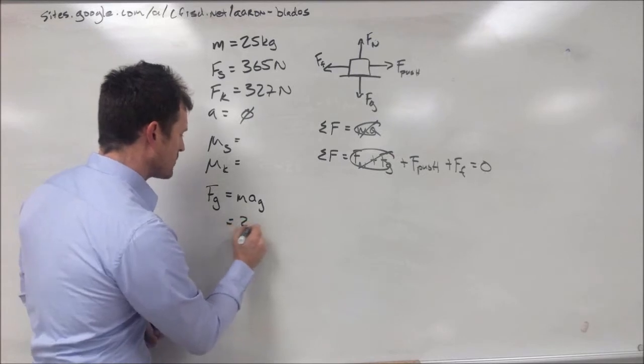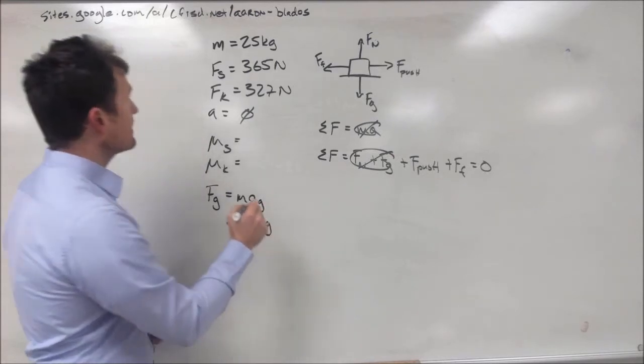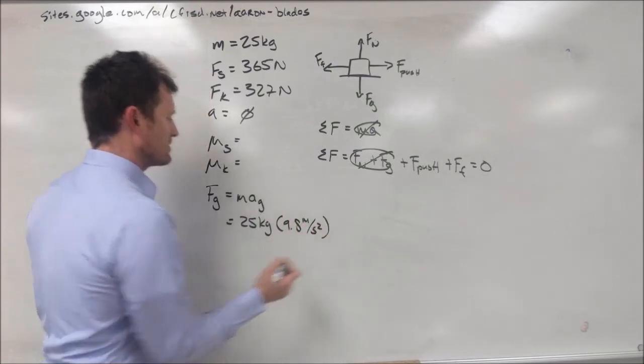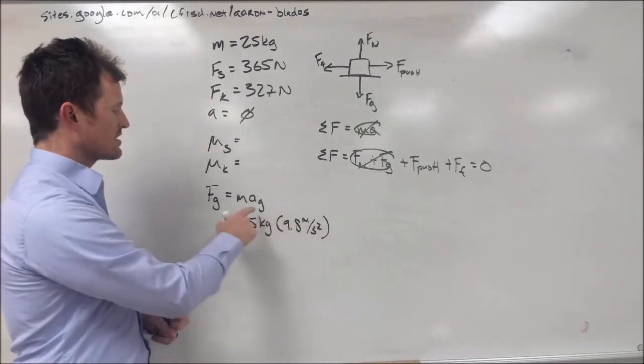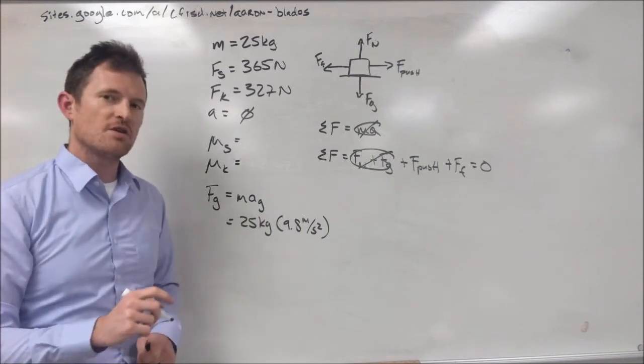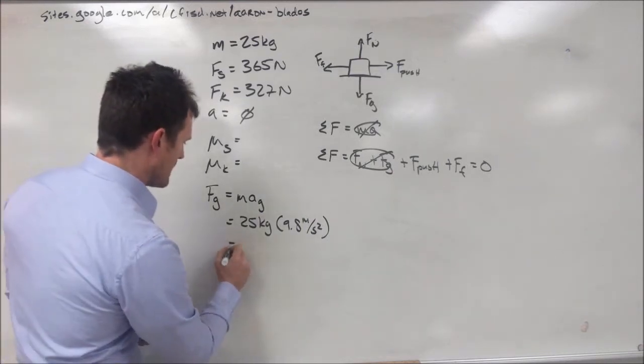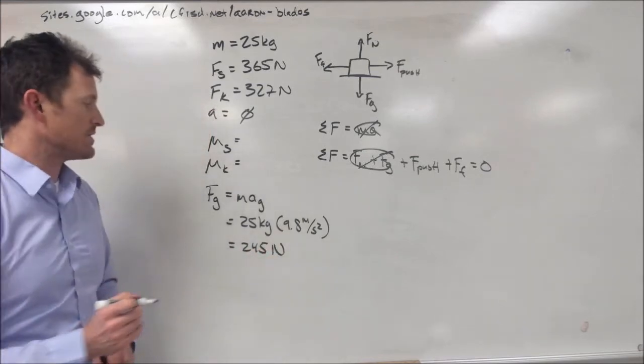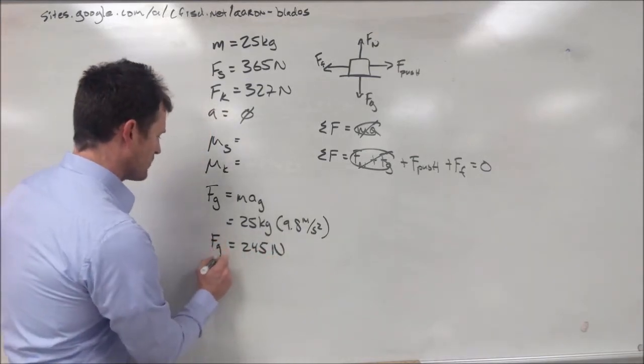Now, our mass is 25 kilograms, and our acceleration is 9.8 meters per second squared. Now, that's just our acceleration due to gravity, because we're assuming that we are on Earth. When we put that into our calculator, we end up with 245 newtons of force of gravity.